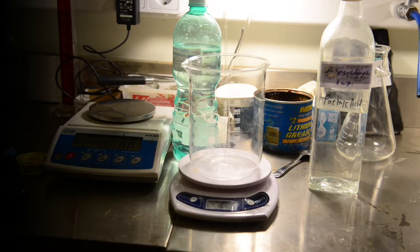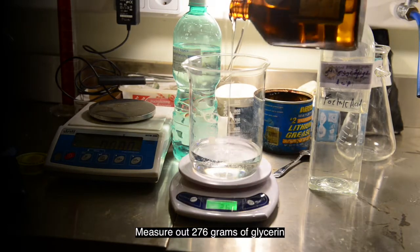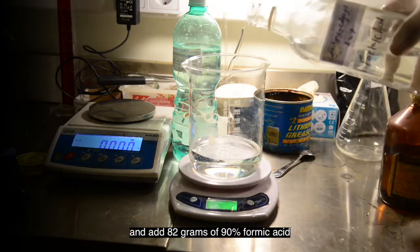To another beaker weight out 276 grams of glycerin, and add 82 grams of 90% formic acid.